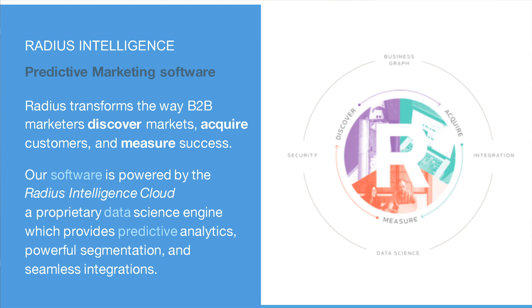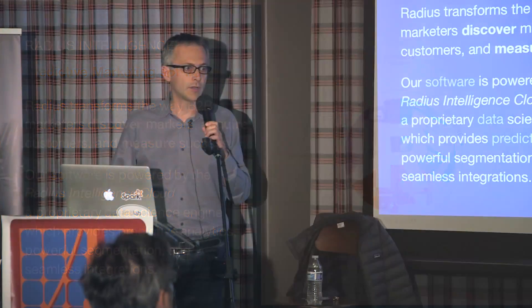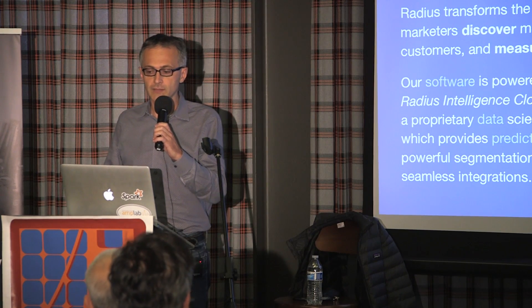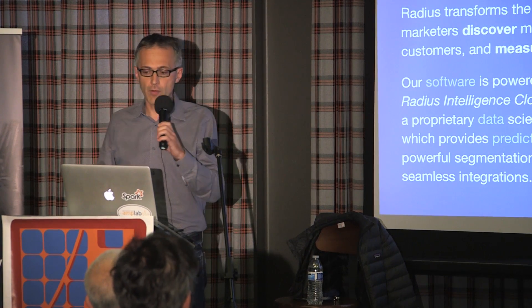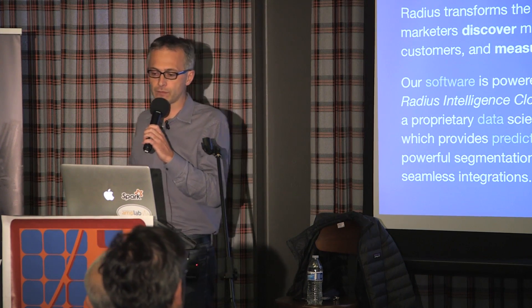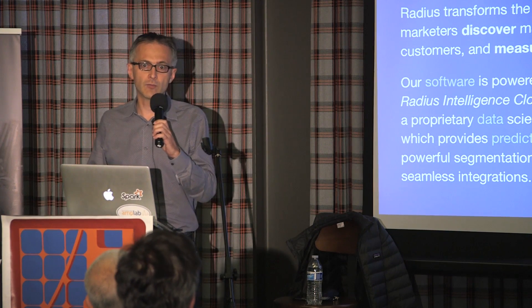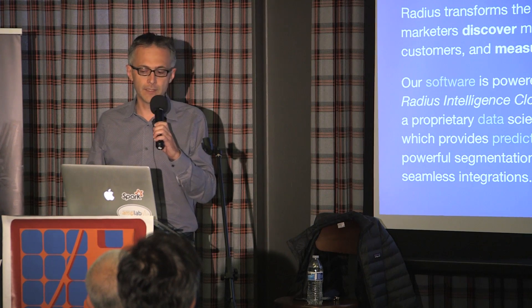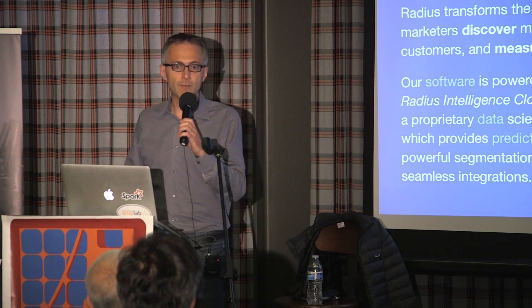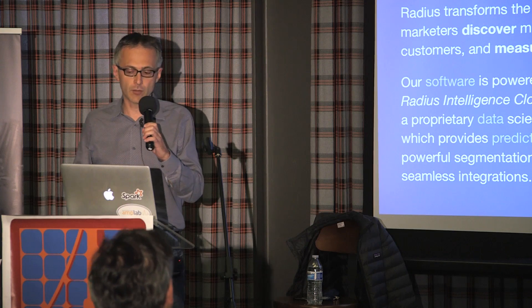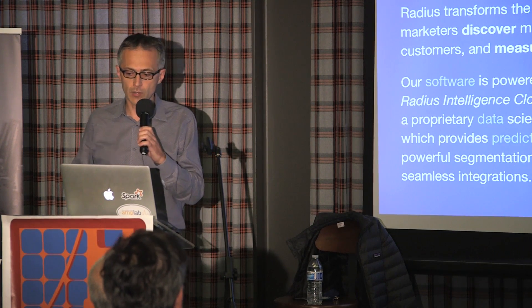Reduce Intelligence's offering is a predictive marketing software platform, essentially designed for marketers to discover and acquire new customers and measure success for those customers. We have a SaaS solution that empowers both software and data. Building a graph of all US businesses is necessary because typically our customer data is not comprehensive or accurate enough. Our solution goes beyond just doing lead scoring with customer data, as we provide customers new data through our predictive segments.